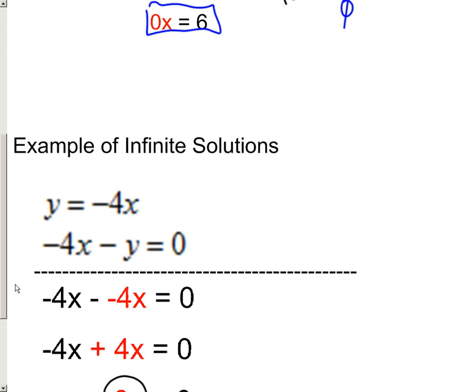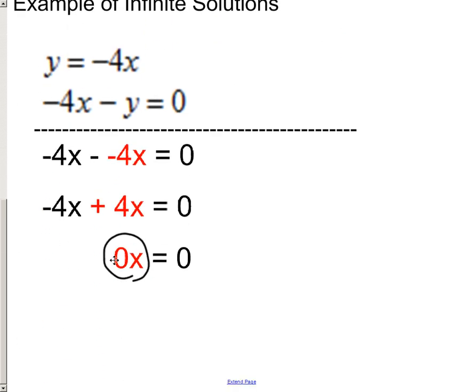This situation is a little bit different. It's 0x equaling 0. Well, I don't care what number you put in for x. 0 times anything really is 0. So there's more than one solution for what x could be. And if there's more than one solution for what x could be, that's going to be infinite. So it's infinite solutions.